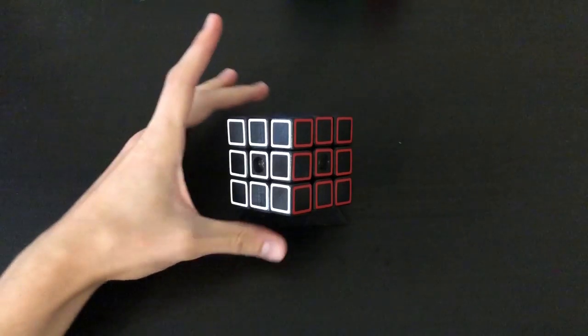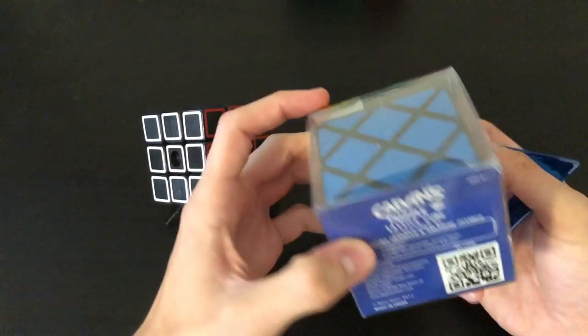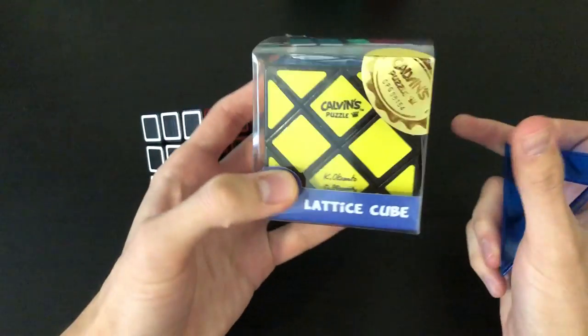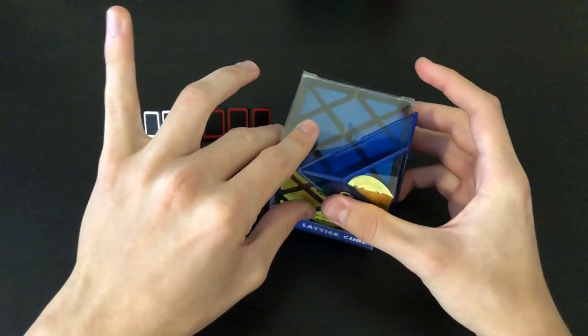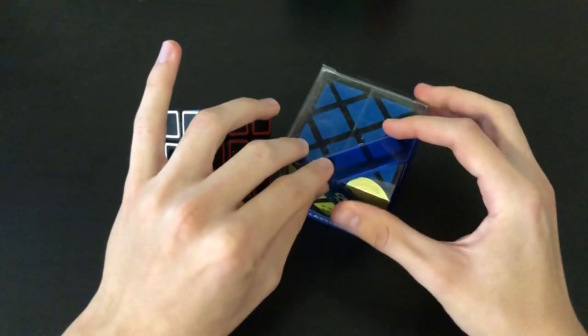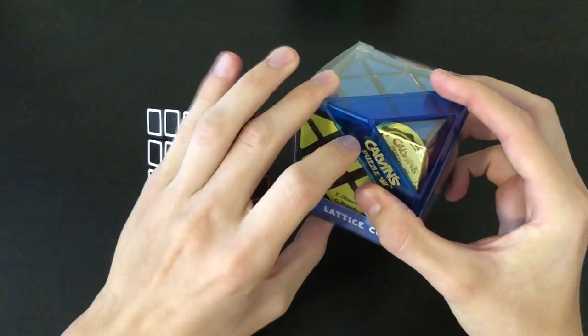So before we get into these puzzles, I just want to let you know that at the end of this video I'll be announcing the winner of this lattice cube which I got in my puzzle crate for the month of July. I already have this puzzle so I'm giving it away to one of you guys and I'll be using a random comment selector at the end of this video and then be sending that person a private message on YouTube. So stay tuned for this at the end of the video.